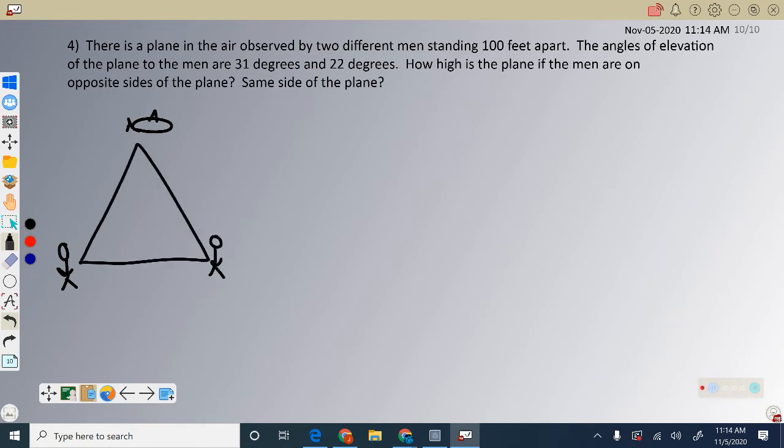Now you have your triangle. The men are standing 100 feet apart, and their angles of elevation are 22 degrees and 31 degrees. I'm going to name the triangle vertices A, B, and call the plane C. We want to know how high the plane is in the air, this height value here.